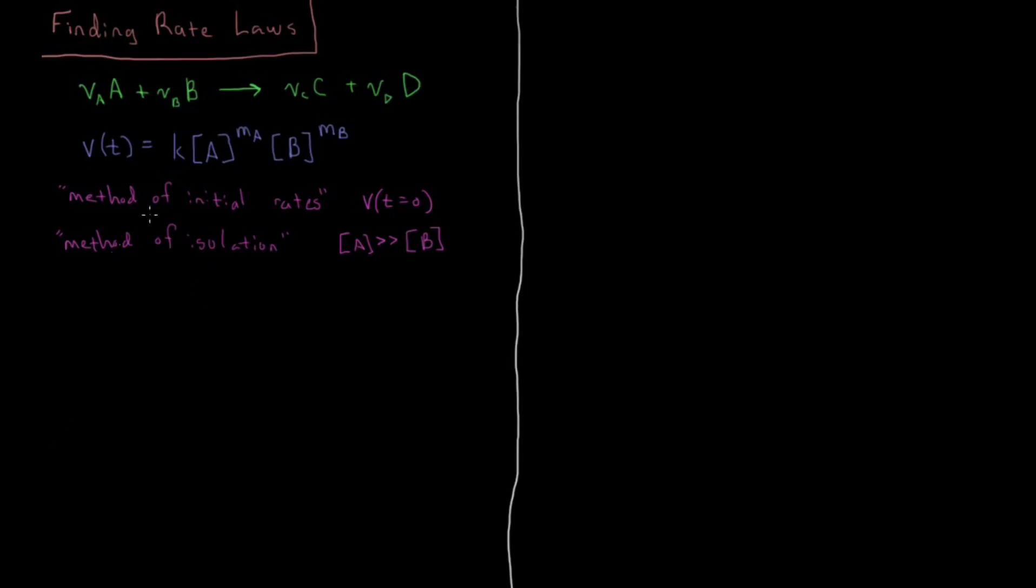So how do we go about doing this? For example, if we did have the method of isolation where A is much greater than B, then A would basically be constant throughout the reaction. So therefore K times [A]^MA is a constant times a constant taken to a constant which is then approximately constant. And this new rate constant we can define as, for example, K prime. So now we have our reaction rate V(t) equals K' times the concentration of B to the power MB.